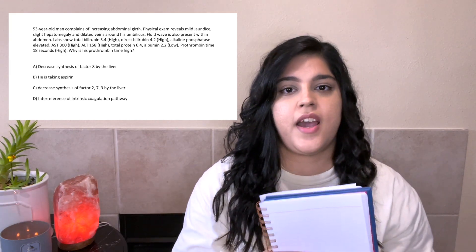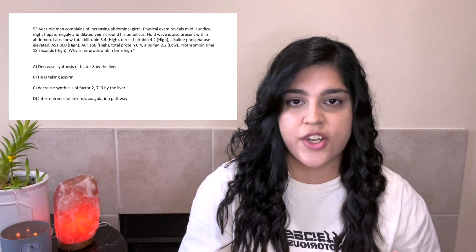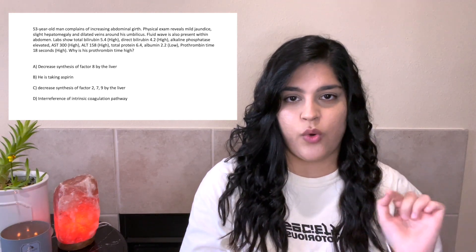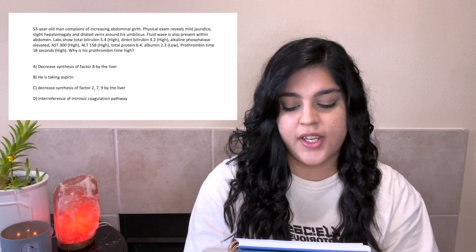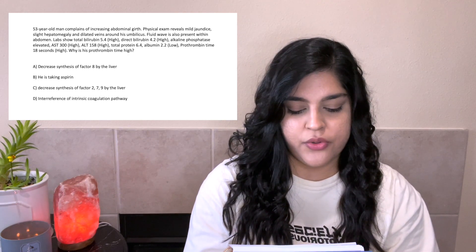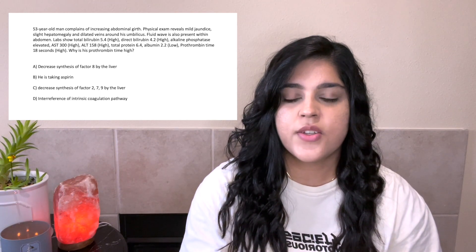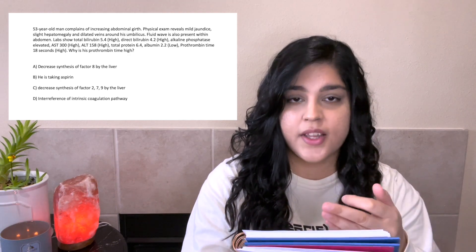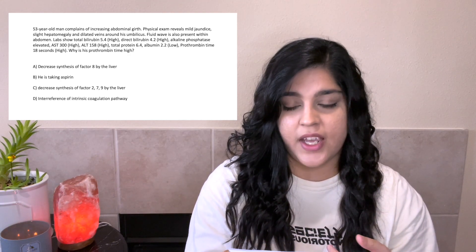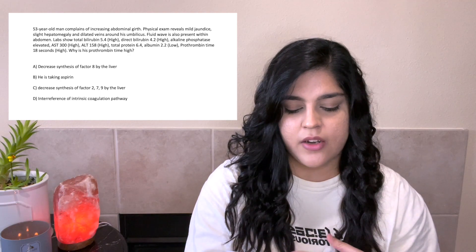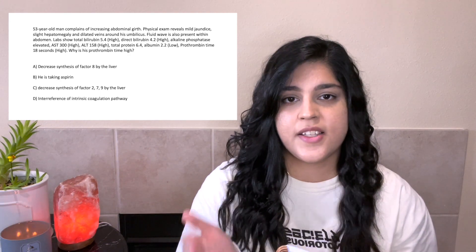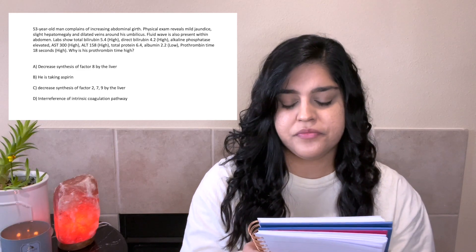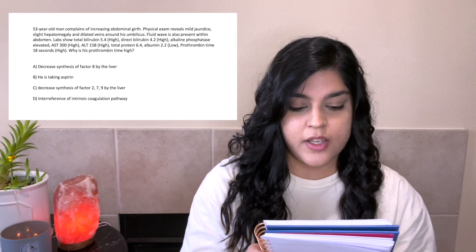The first thing I do when I get to a UWorld question is I read the last line of the question first. For this question, it asks: 'Why is his prothrombin time high?' So now we know what the question is asking. Then I quickly skim the choices — we have A through D — and then I start from the beginning of the question.